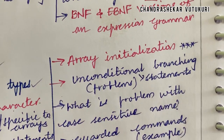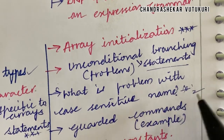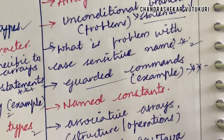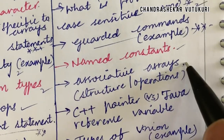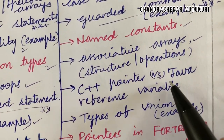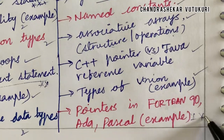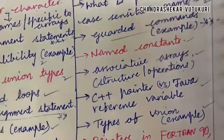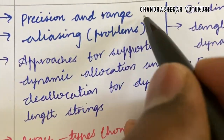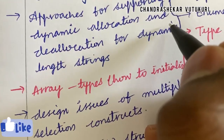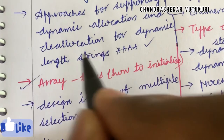Dear students, the second unit is very lengthy. Unconditional branching problems and statements, and what is the problem with case-sensitive names, are short questions. Guarded commands with examples may be a long or short question — from any part of Unit 2, you are certain to get a question. Name constants, associative arrays in structure and operations, C++ pointers versus Java reference variables, types of union with examples, and pointers in Fortran 90, Ada, and Pascal with examples are very important questions. The course is too lengthy, so work out each parameter. Precision and range, and aliasing problems and approaches for supporting dynamic allocation and deallocation for dynamic-length strings, are top questions. Array types and how to initialize may be a short question.